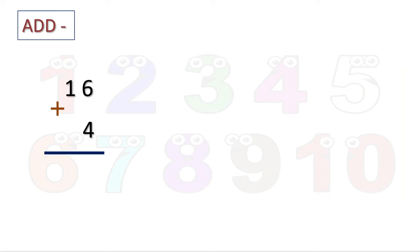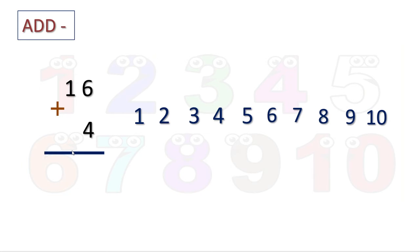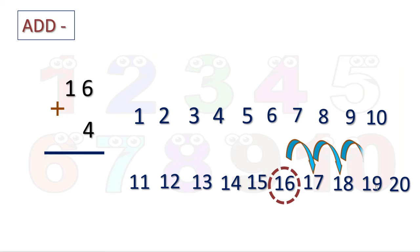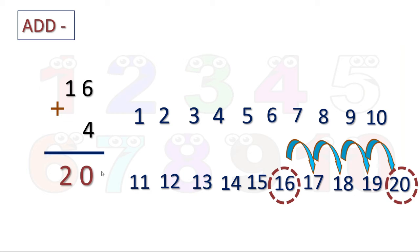Here: 16 plus 4. Let us write 1 to 10 and 11 to 20. We encircle 16. How many steps do we count in the forward direction? 4 steps: first, second, third, fourth number. We reached 20. So 20 is our answer. 16 plus 4 is equal to 20.